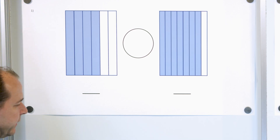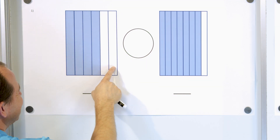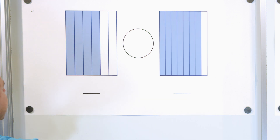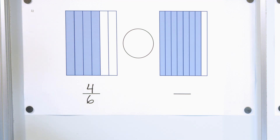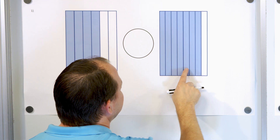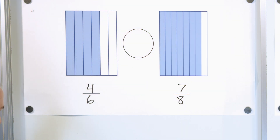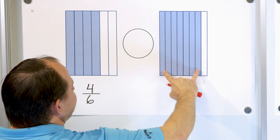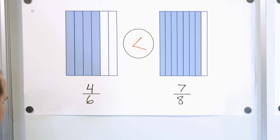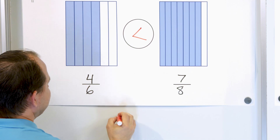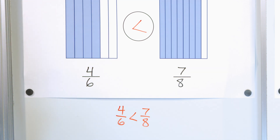Here's our next fraction. We have 1, 2, 3, 4, 5 — 6 total, and I only have 4 out of 6 — so the fraction is 4 sixths. And here we have 1, 2, 3, 4, 5, 6, 7, 8, and I only have 7 out of 8. So which fraction is bigger? This one has way more shading than this one, so 4 sixths has to be smaller. The arrow points towards the smaller fraction. We say 4 sixths is less than 7 eighths.